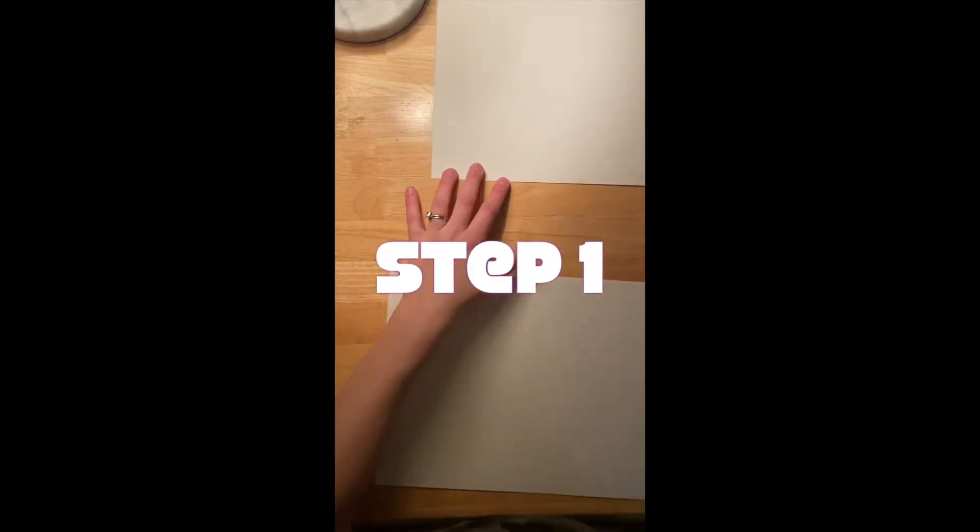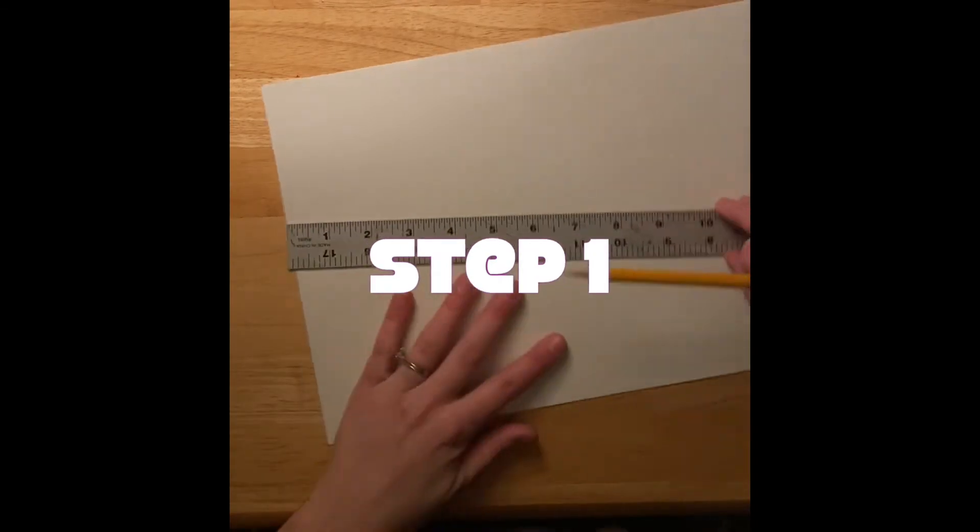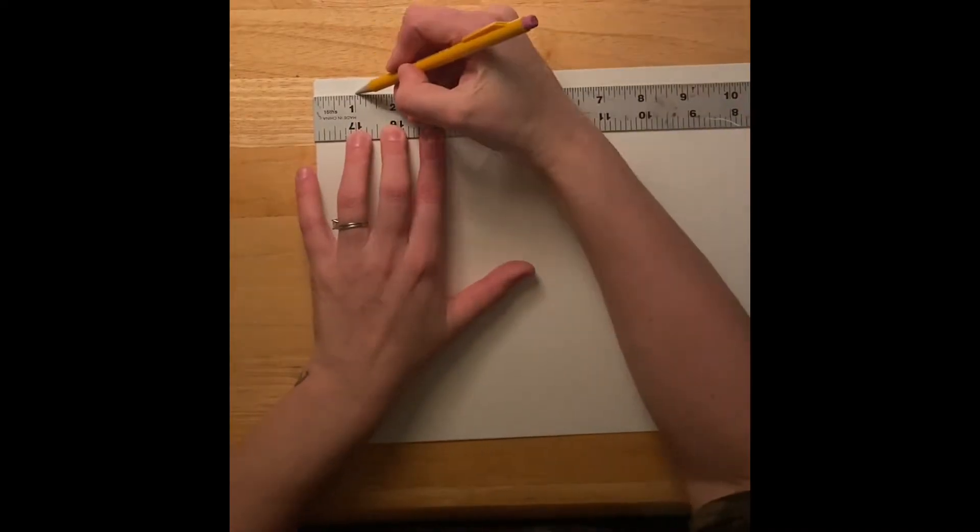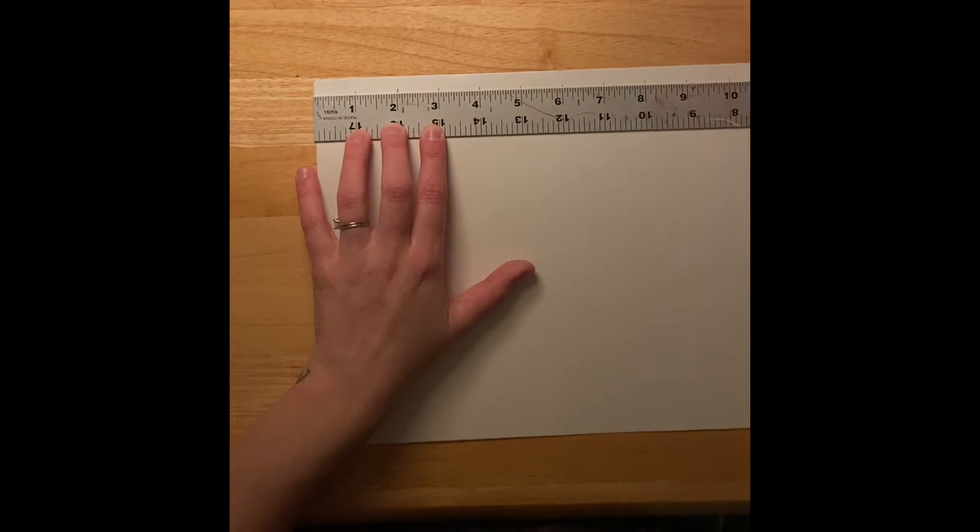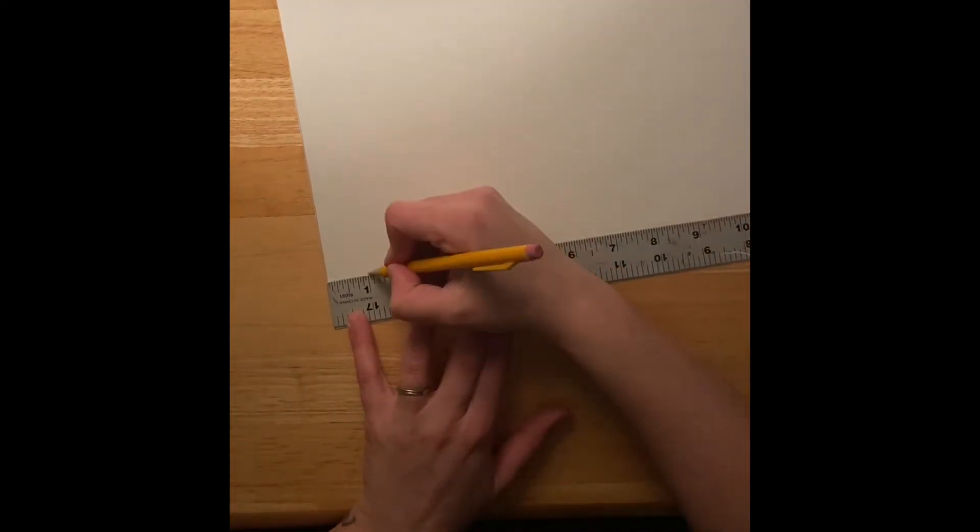Step one, start with one piece of paper and using a ruler, go at the very top and mark one inch ticks all the way across your page. Slide your ruler down and do the same exact thing on the bottom.